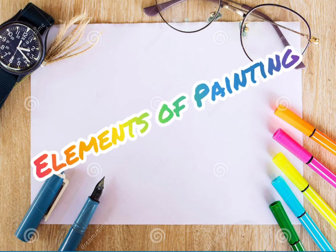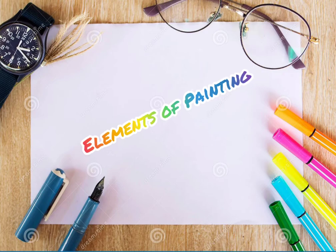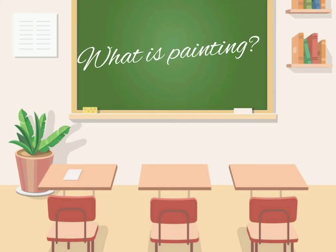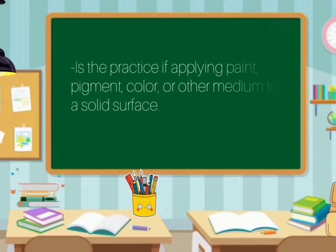Now, let's proceed to the discussion. What is painting? Painting is the practice of applying paint, pigment, color or other medium to a solid surface. The medium is commonly applied to the base with a brush, but other implements such as knives, sponges and airbrushes can be used. In art, the term painting describes both the act and the result of the action.